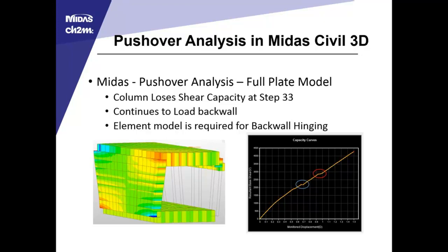Looking into the detailing further: the areas of high stress concentration on the bottom and top corners of the backwall show that we'd likely get some yielding in those sections in the event of an extremely strong earthquake. However, that dissipated fairly quickly. We expect to lose a little bit of cover there, and just want to confine that steel and make sure the longitudinal bars stayed intact.